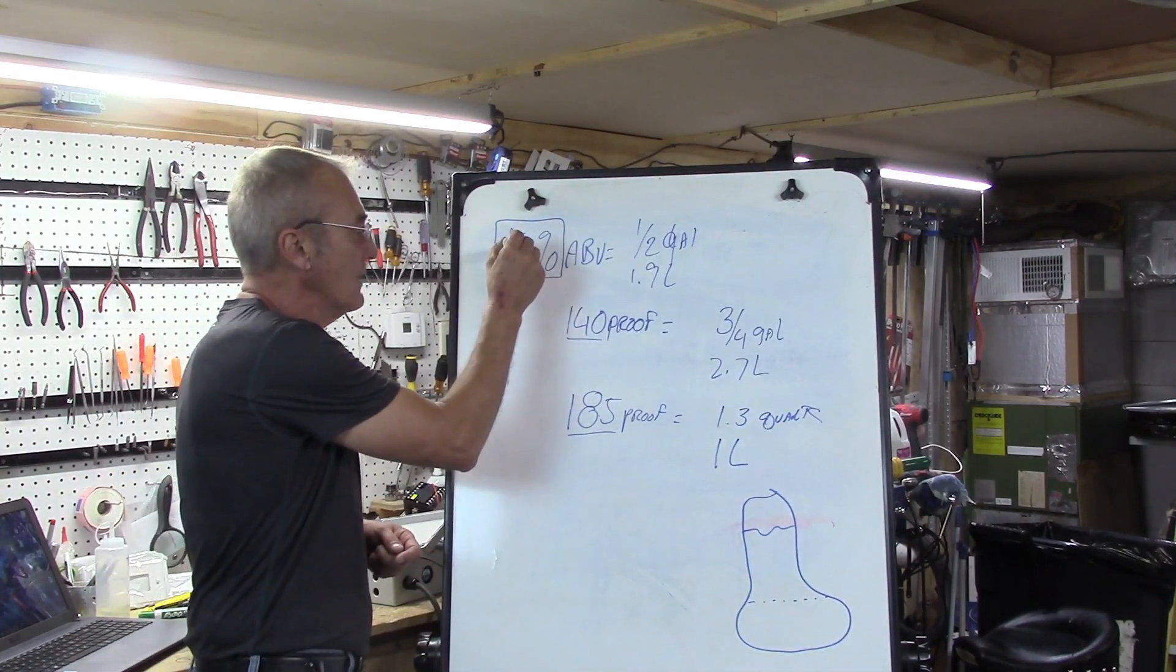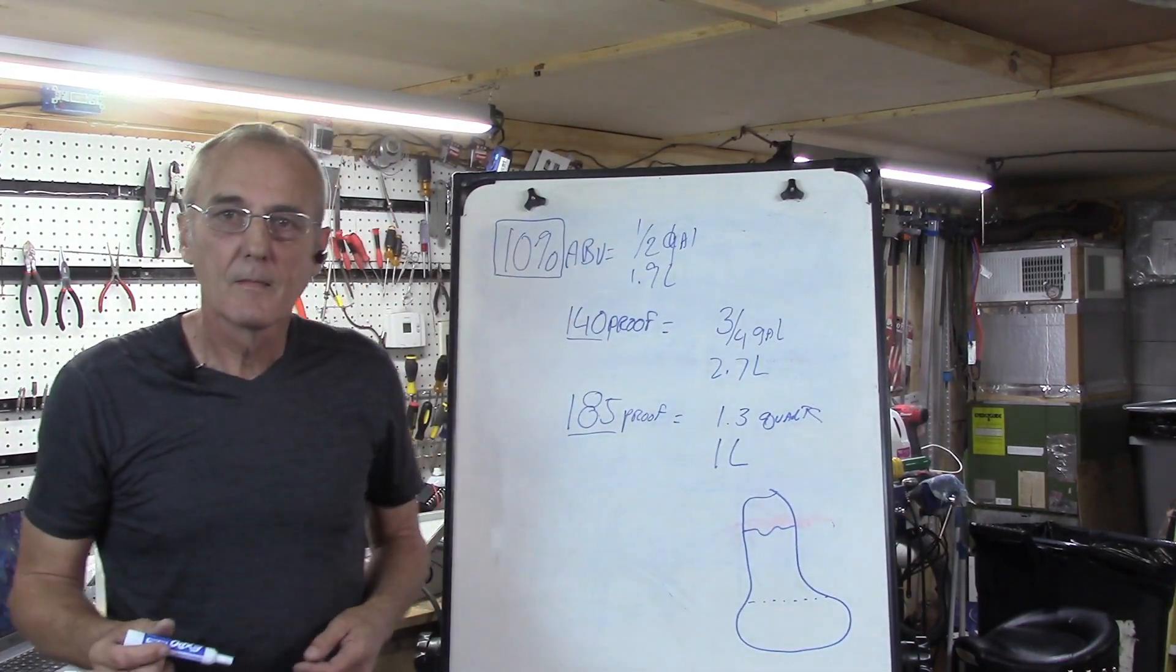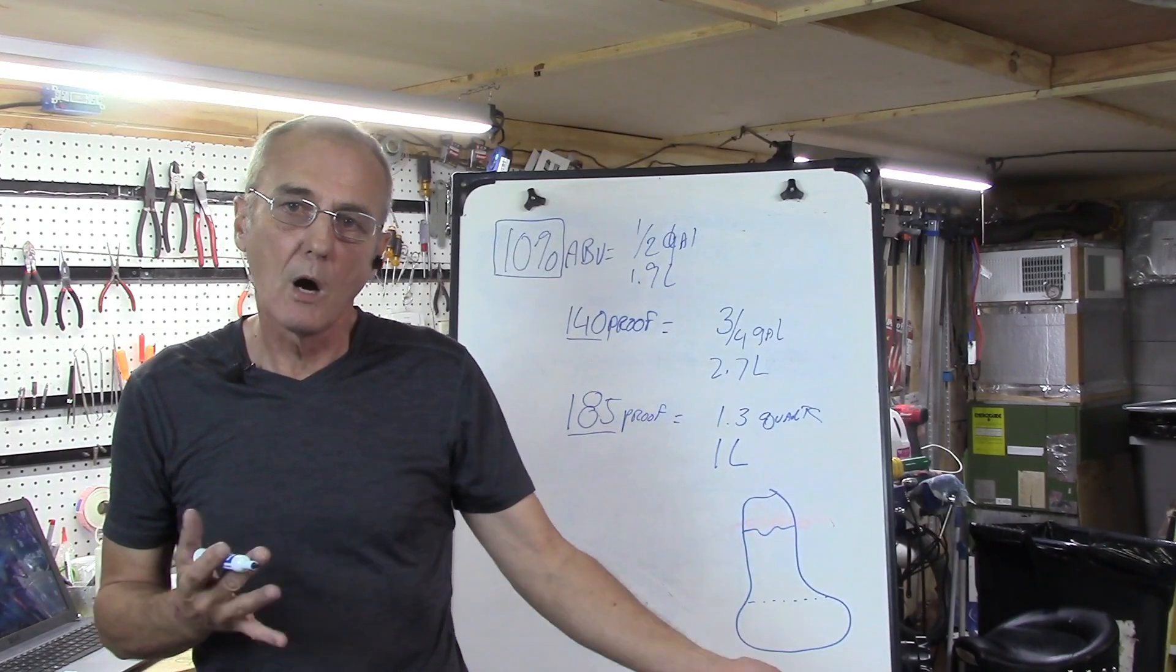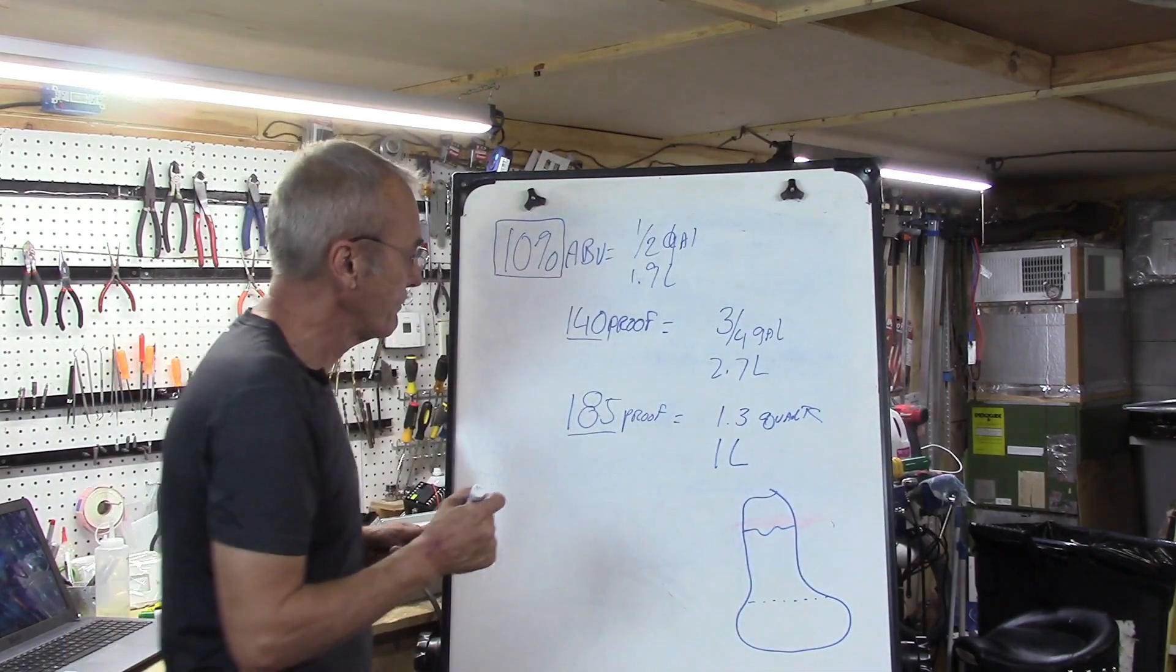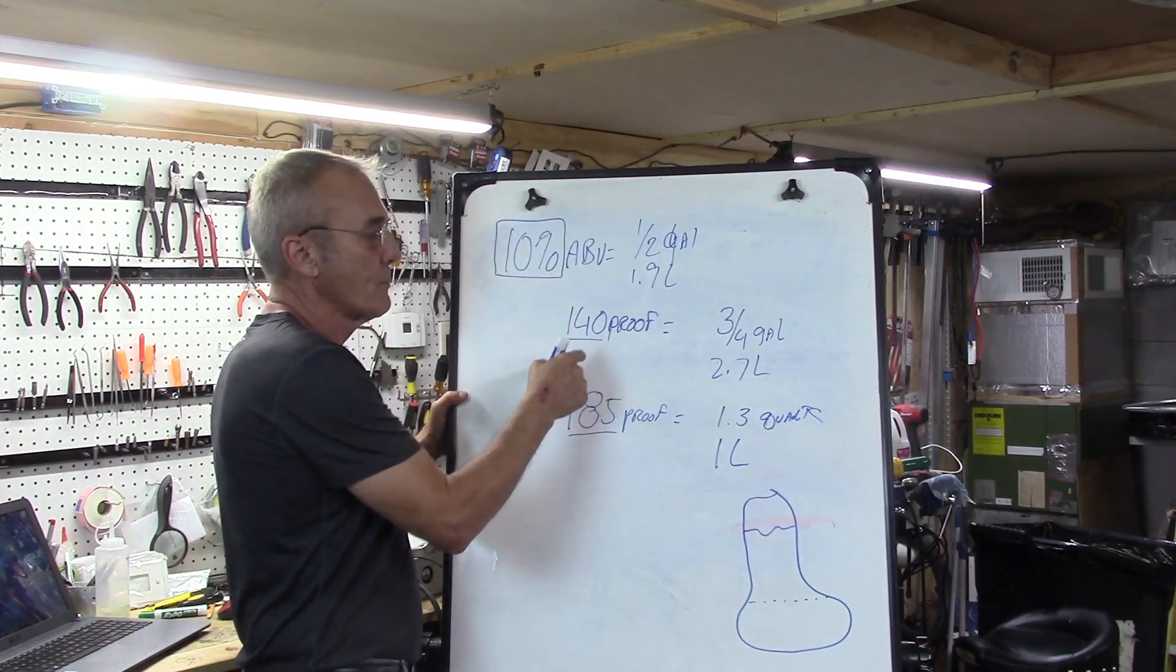So at the end of the day, this figure had nothing to do with these two figures. These two are created by your process, not a derivative of your fermented mash or wash, whatever. So far so good?